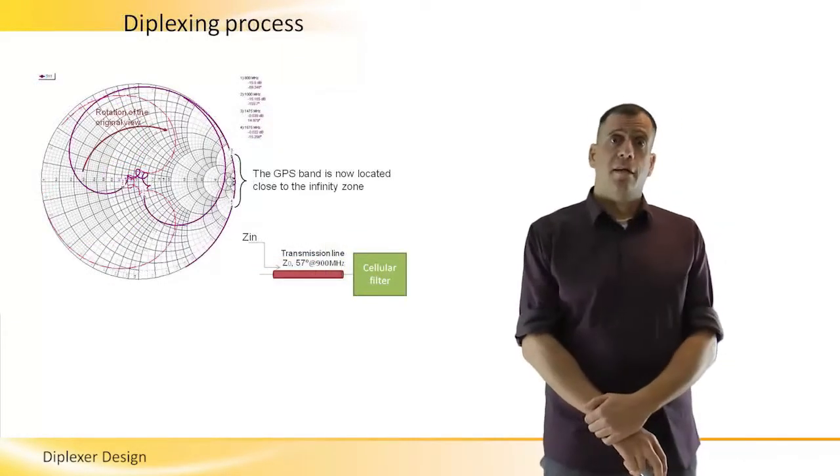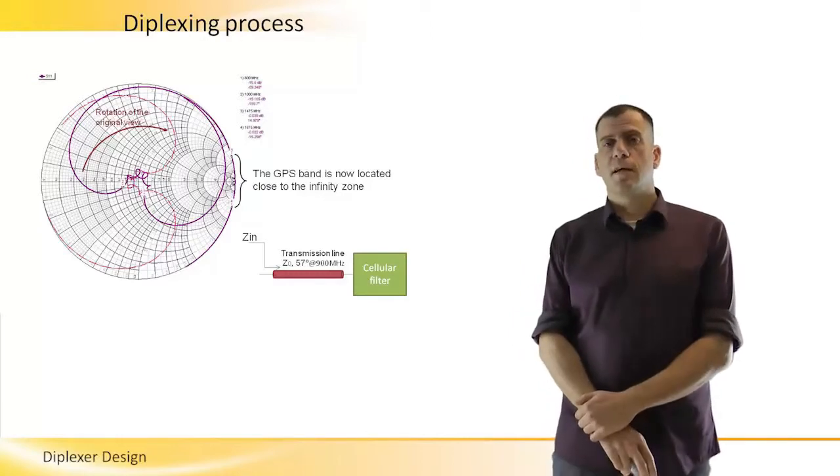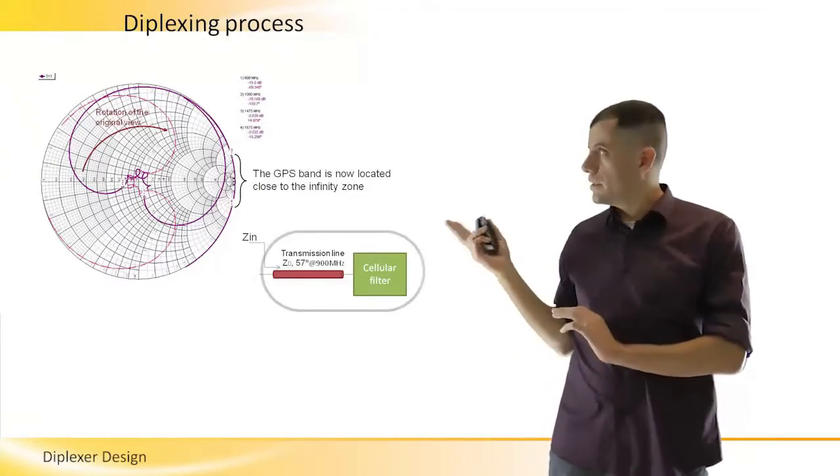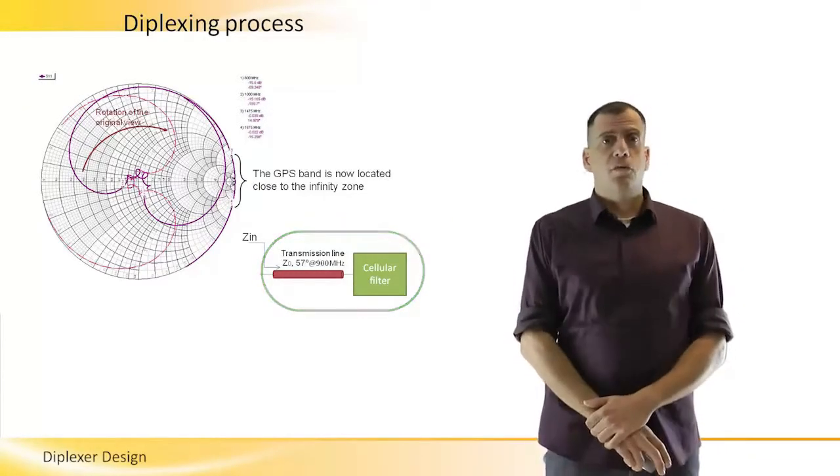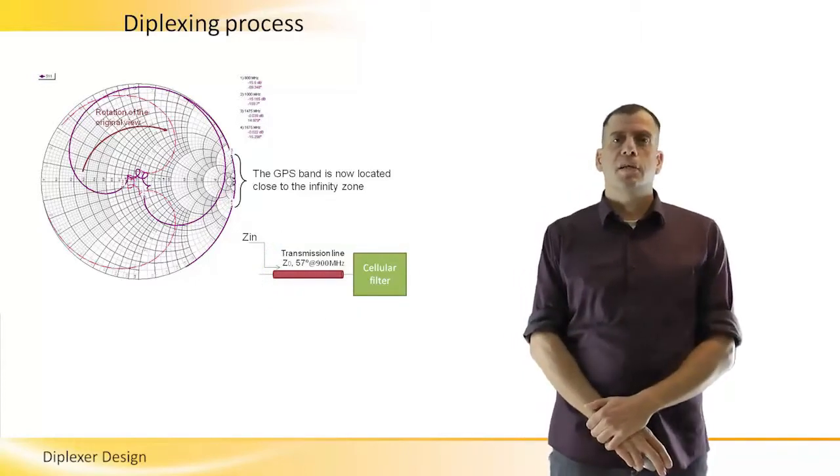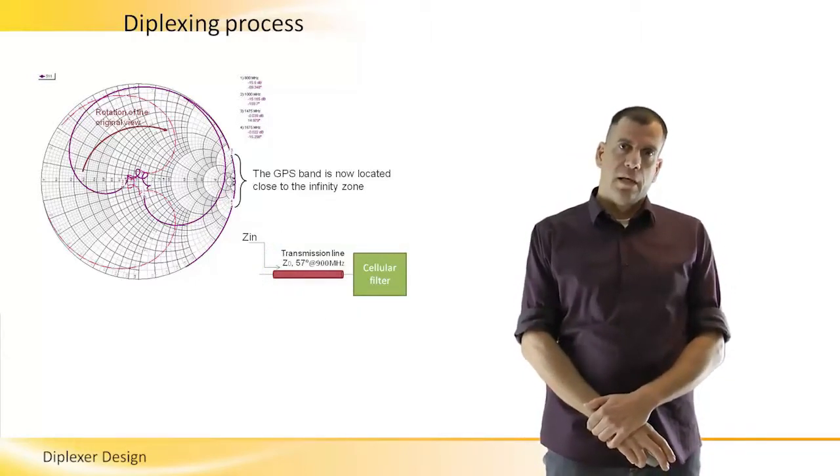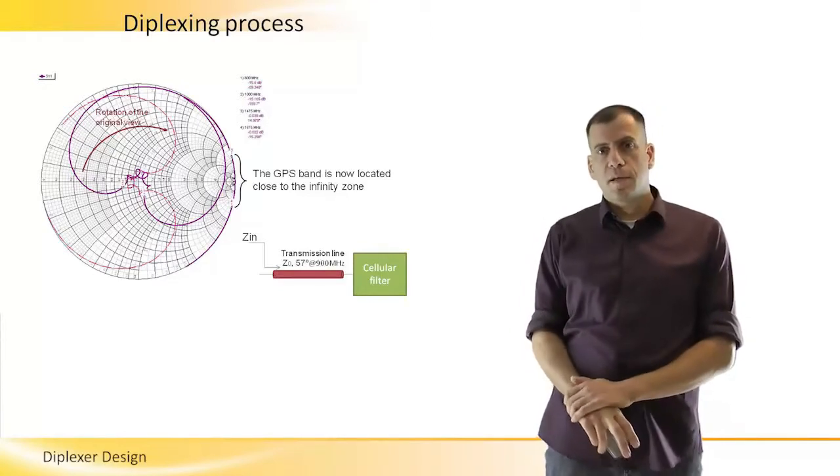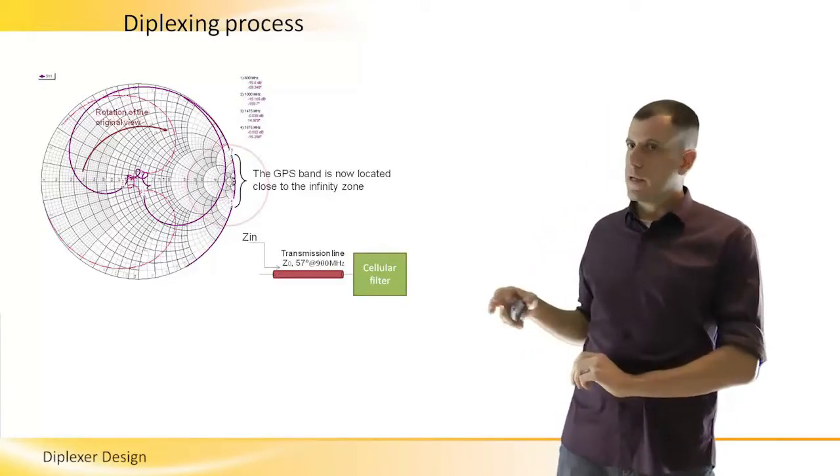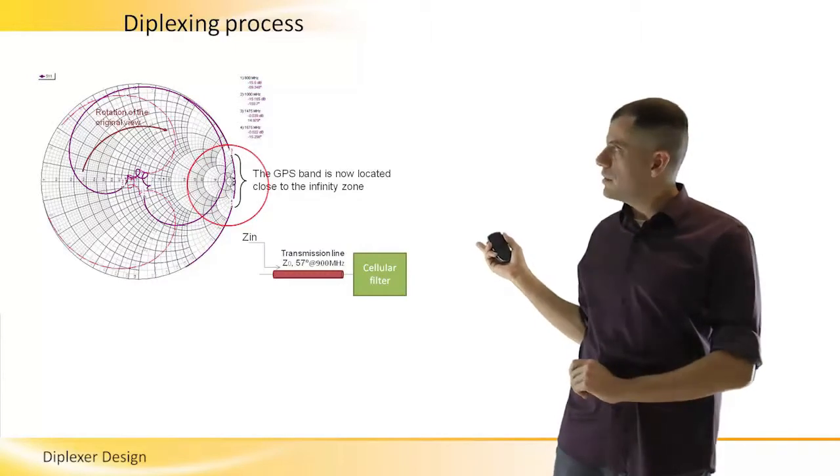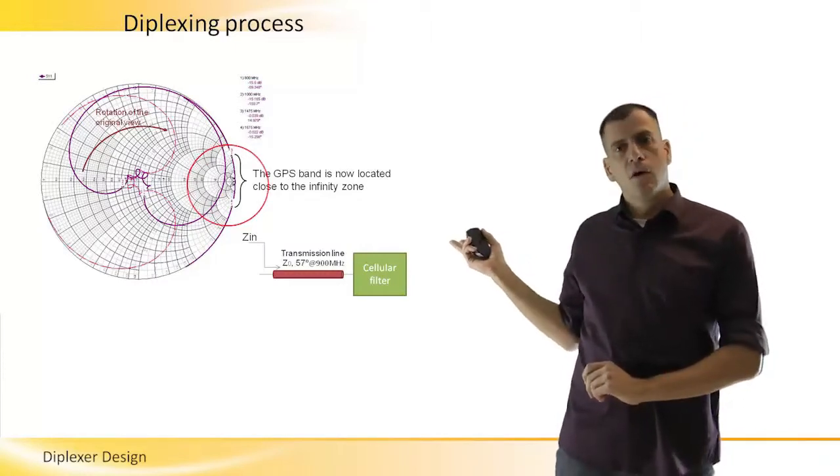In this case, I needed a 57 degrees transmission line at frequency of 900 MHz in order to rotate the reflection image to the desired location. And as can be seen, the GPS part of the reflection image is now located at the right side of the Smith chart, near the infinite ohm impedance.